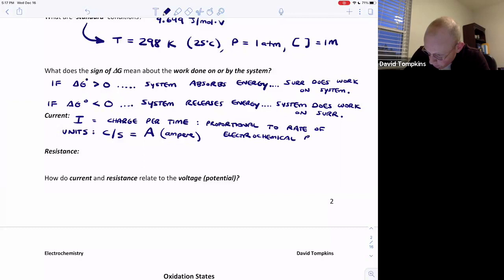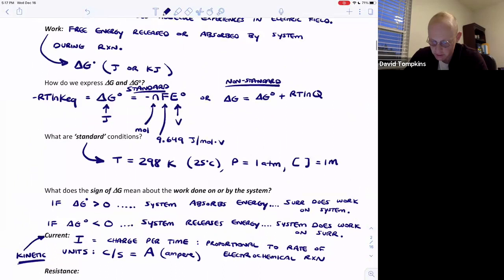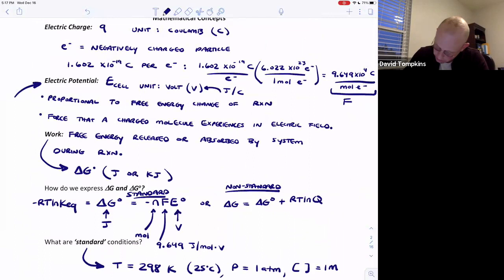The current is proportional to the rate of the electrochemical reaction. You want to think of current as a kinetic parameter where it relates to how fast the reaction goes, not so much its favorability. Whereas the potential relates to the free energy change delta G, which is a thermodynamic parameter, and tells us about favorability or the force on a charged molecule.